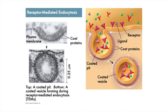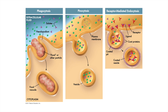In all of these forms of endocytosis and exocytosis — or bulk transport — molecules and particles are moving with their concentration gradients, but these methods still require energy. In the next chapter we'll talk more about how cells manage their limited energy resources.